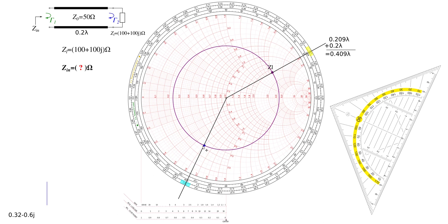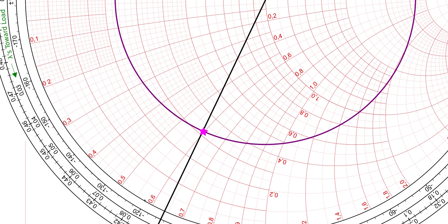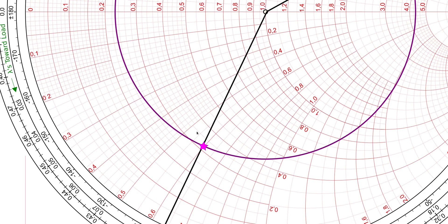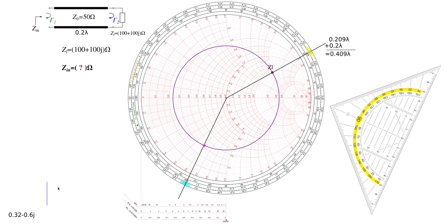I'm gonna make a different color so we can see that better. Maybe we can make it in pink. So where's this point located? Well, it's at 0.6 imaginary part and real part is 0.3, 0.31, 0.32, something like that. What I can do now is I can maybe mark that here and say Z_in is equal to 0.32 minus 0.6j.